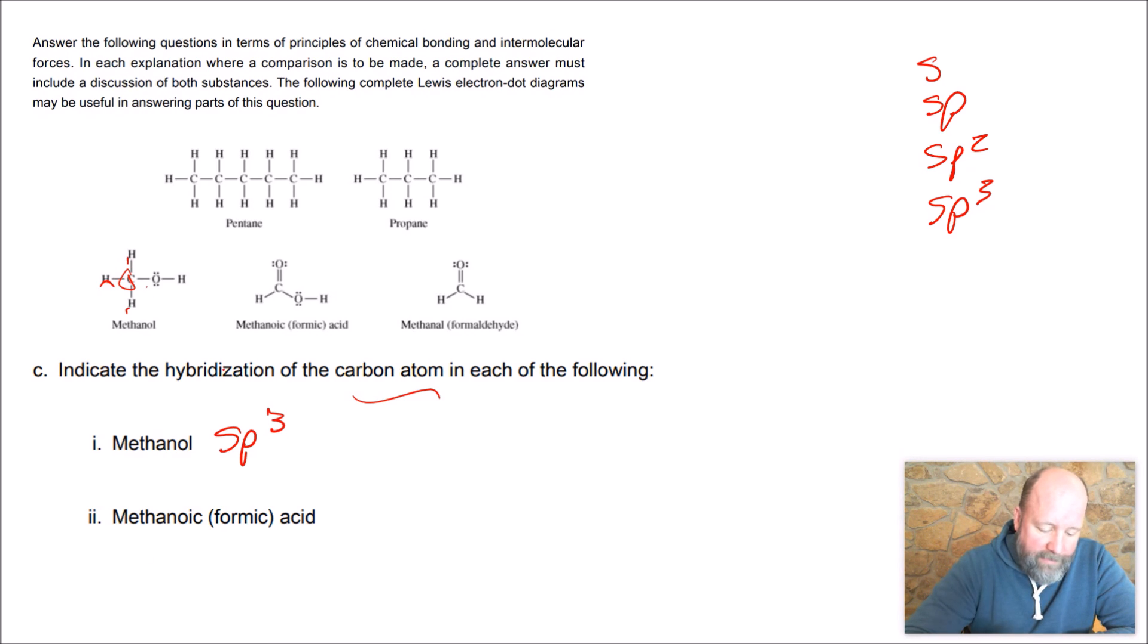So looking at methanol, four things stuck to it, that's SP3. Methanoic or formic acid, that's this guy right here. I got a carbon here, and it looks like there's only three things stuck to it. So that would be SP2. Done. One point for each of those.